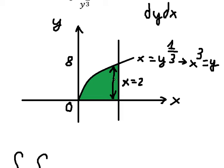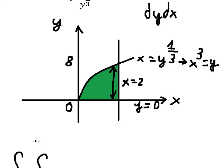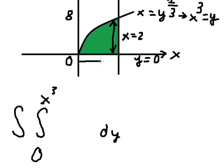We see that y is smaller than x to the power of 3, and the lower line is y equals 0. So the bounds of dy should be from 0 to x cubed. For x, we start from 0 and stop at 2, so the bounds of x are from 0 to 2.